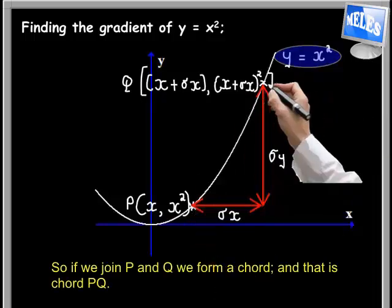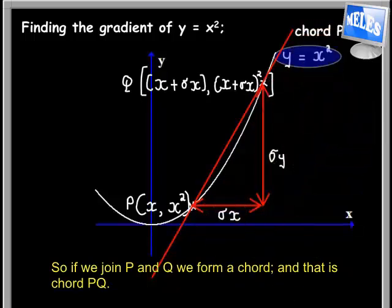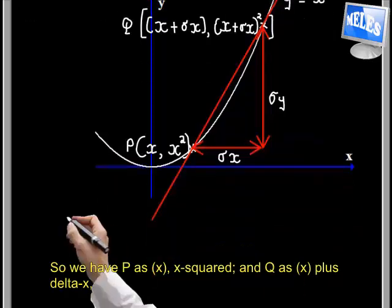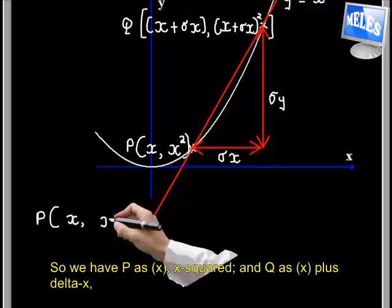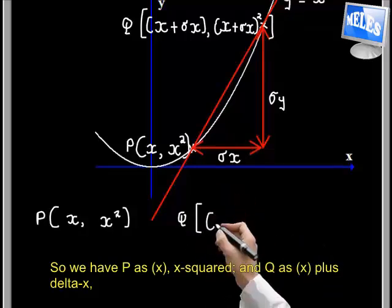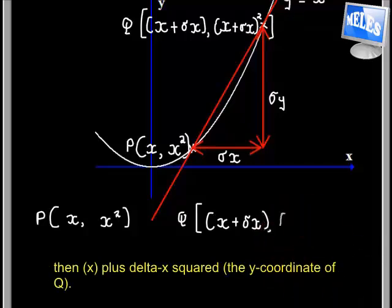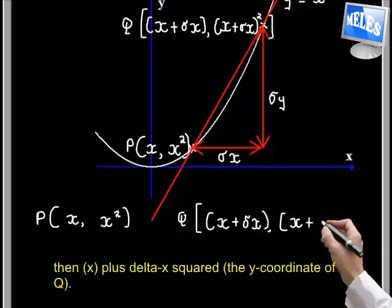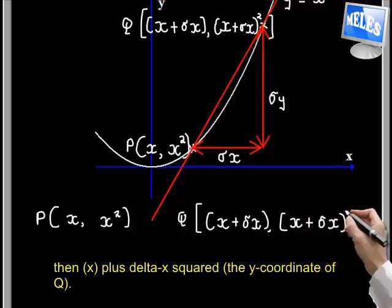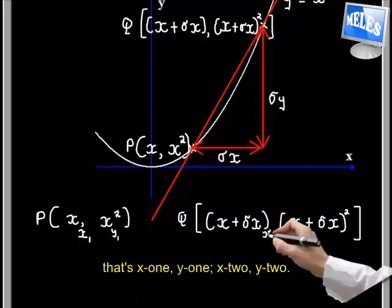So if we join P and Q we form a chord, and that's called PQ. So we have P as x, x squared and Q as x plus delta x, x plus delta x squared. That's the y-coordinate of Q. So according to our previous notation that's x1, y1, x2, y2.